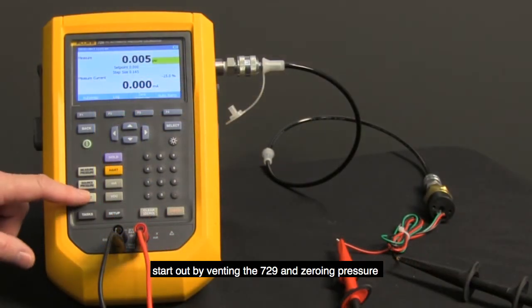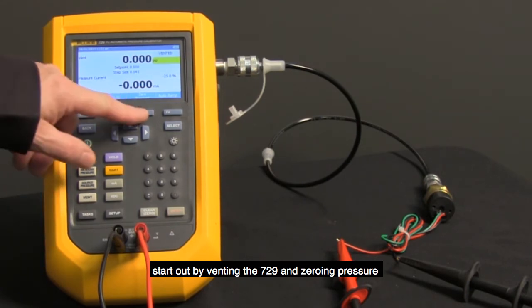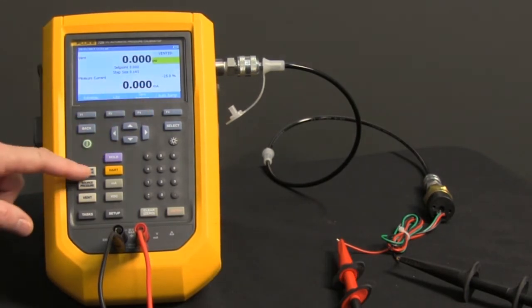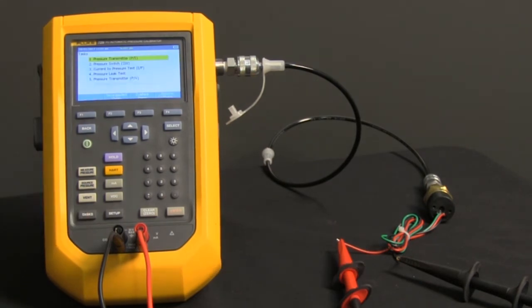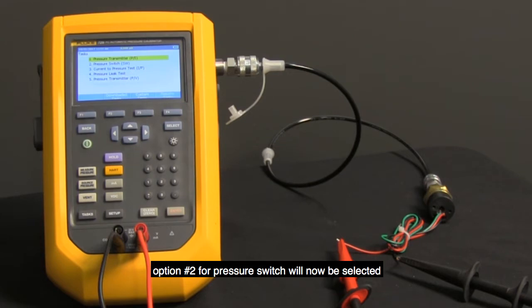Start out by venting the 729 and zeroing pressure. Then we're going to go in and select tasks. Option number two for pressure switch will now be selected.